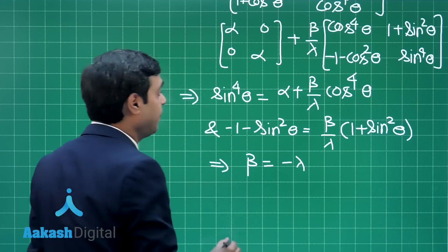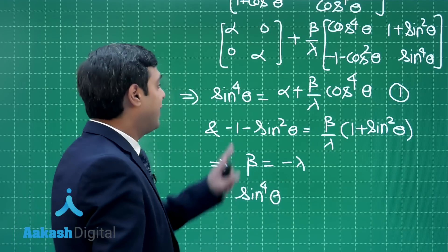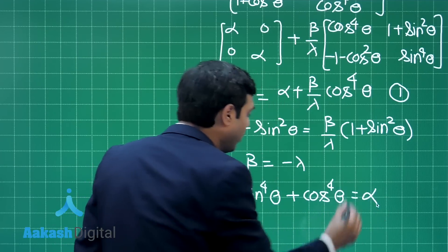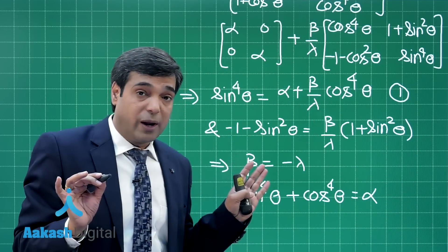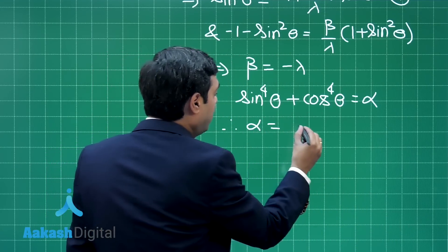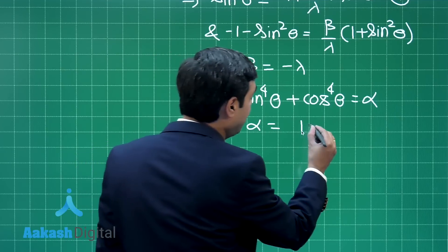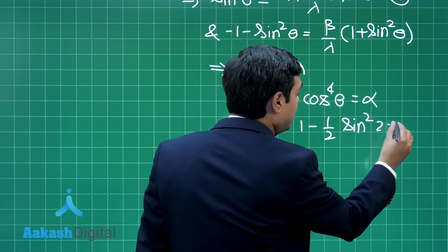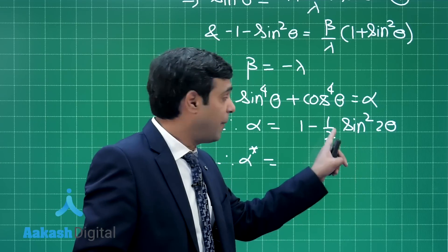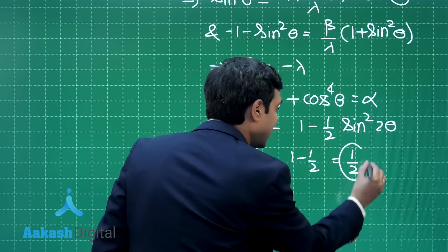Substituting β = -λ into equation 1: sin⁴θ + cos⁴θ = α. We can write sin⁴θ + cos⁴θ = (sin²θ + cos²θ)² - 2sin²θcos²θ = 1 - (1/2)sin²2θ. So α* (the minimum value) occurs when sin²2θ is maximum (= 1), giving α* = 1 - 1/2 = 1/2.